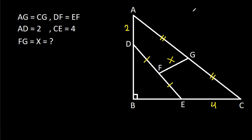From point F, if we draw a perpendicular on BC and a perpendicular on AB, suppose this point is P and this point is Q.